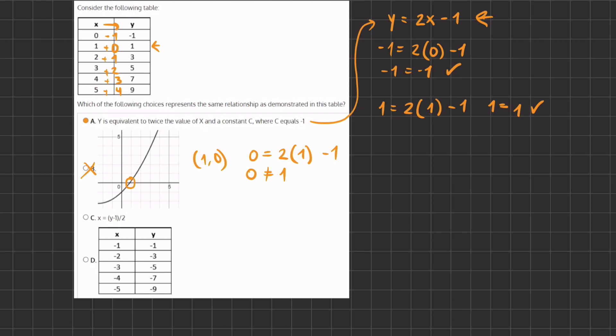Now let's see our option for C. C states that x = (y - 1)/2. Same thing, we're going to pick a point from our table. Let's pick our first point and see if it seems to be a correct statement.